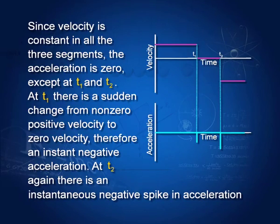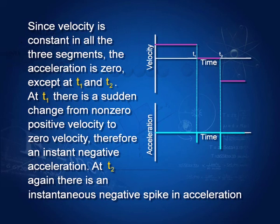We have the velocity time graph obtained in the previous slide. If velocity is constant, then the acceleration is 0. Velocity is constant here but negative, and acceleration is 0 — except at times t1 and t2. At time t1, the velocity reduces from some positive quantity to 0, meaning there is an acceleration. At time t2, the velocity goes from 0 to some negative value, and again there is some acceleration. So from the velocity time graph, you can get the acceleration time graph.